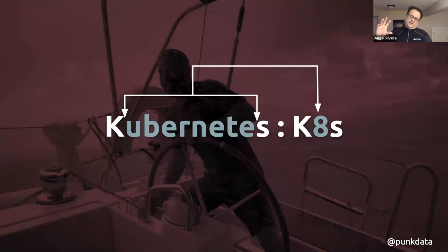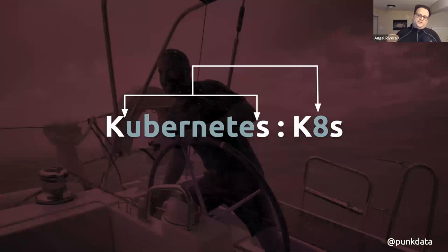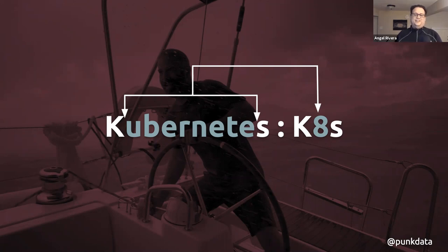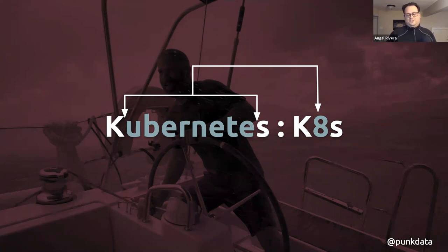The first thing I want to talk about is the acronym k8s. I started using Kubernetes years ago and always wondered what this stood for. At a CoreOS conference in New York they explained it: it's the letter 'k' from the start of 'Kubernetes,' the 's' at the end, and there are eight characters in between — so k8s is just shorthand for the characters between the k and the s in the word Kubernetes.